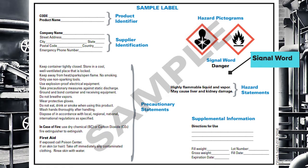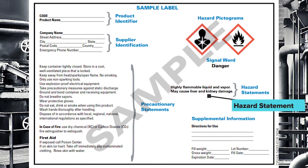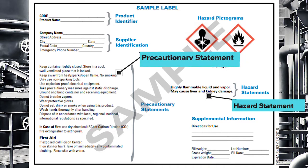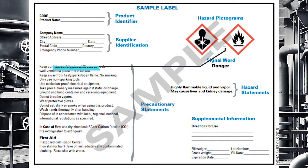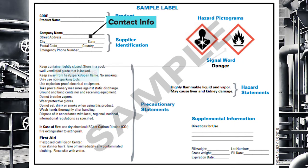They need to have the signal word, which is either 'danger' or 'caution.' They need to have the hazard statement, precautionary statements, relevant pictograms as established by GHS, and the manufacturer's contact information. So that's six items — quite a bit of information.